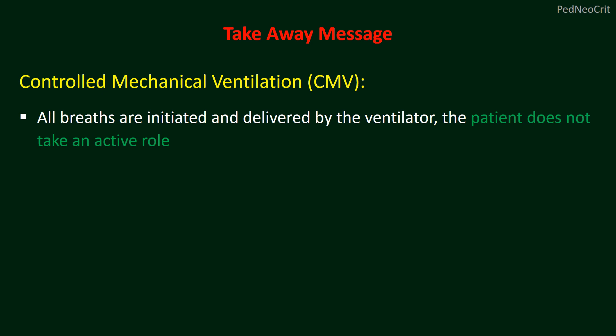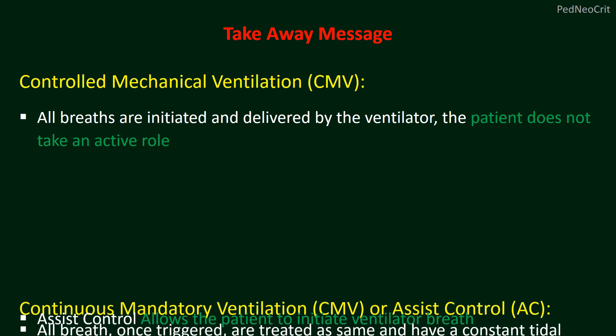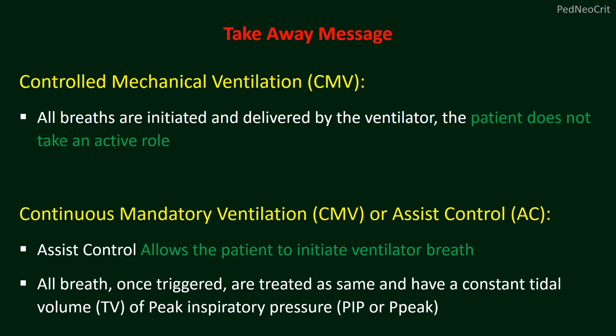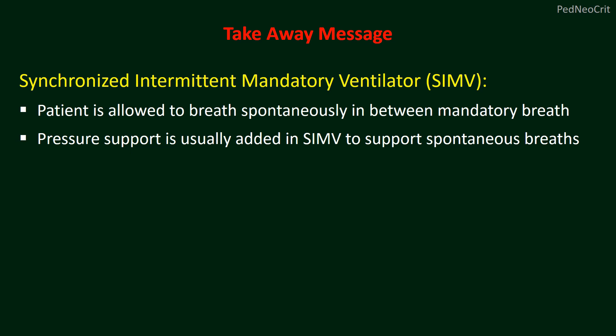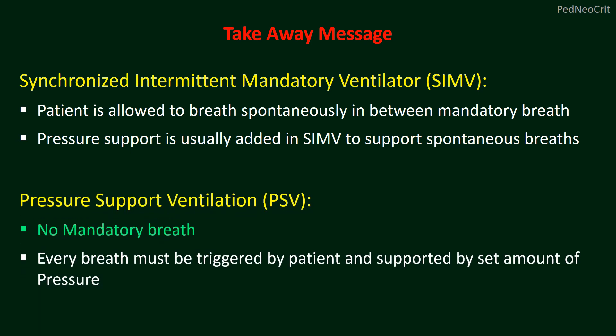So, let us see what we discussed today. In controlled mechanical ventilation, all breaths are initiated and delivered by the ventilator and the patient does not take an active role. In continuous mandatory ventilation or assist control, it allows the patient to initiate ventilator breaths; all breaths once triggered are treated the same and have a constant tidal volume or peak inspiratory pressure. In SIMV, the patient is allowed to breathe spontaneously in between mandatory breaths and pressure support is usually added to support those spontaneous breaths. In pressure support, there is no mandatory breath — every breath must be triggered by the patient and supported by a set amount of pressure.